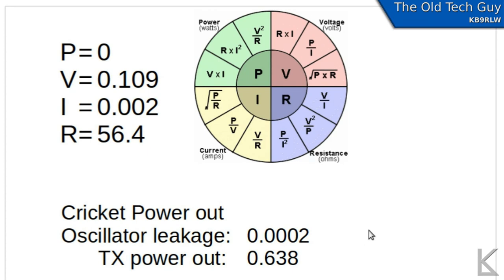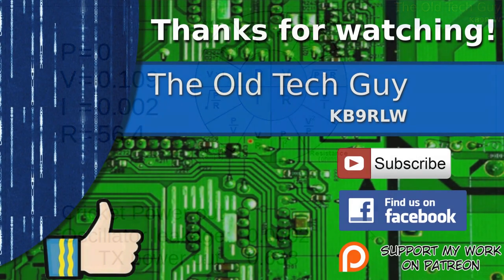Now 0.2 milliwatts is not a lot of power but once you put that on an antenna it does radiate and somebody close by probably within about a mile might be able to pick up that oscillator leakage from your direct conversion receiver. Maybe not a mile but definitely a few hundred yards. So anyway there we go. I now know exactly how much power my cricket's putting out and I know how much the oscillator is leaking and that's how you do it. I hope you found that interesting and we'll see you in the next video. Thanks for watching.